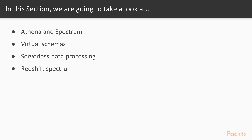We're going to take a look at what each of those are, how they work, and how they interact together to make your life a little bit easier when it comes to processing large volumes of data. Next we'll take a look at virtual schemas and what they are and how we create them with Amazon Athena. Then we're going to use the schemas we've created to do a little bit of serverless data processing on a dataset example stored directly on Amazon S3. Finally, I'll be giving you an overview of how to use Redshift Spectrum to join data in Amazon S3 with data that already lives in your Redshift cluster.